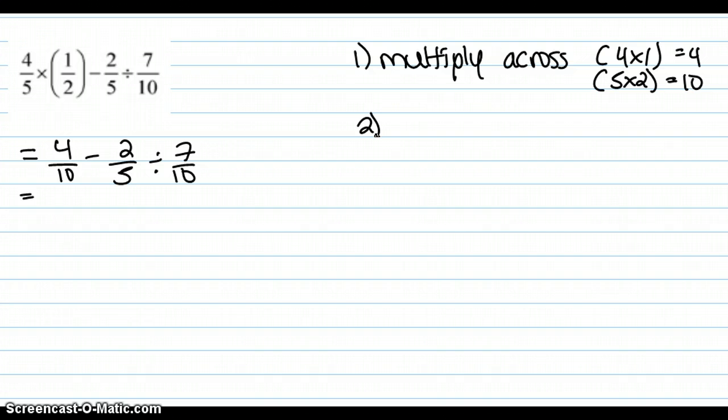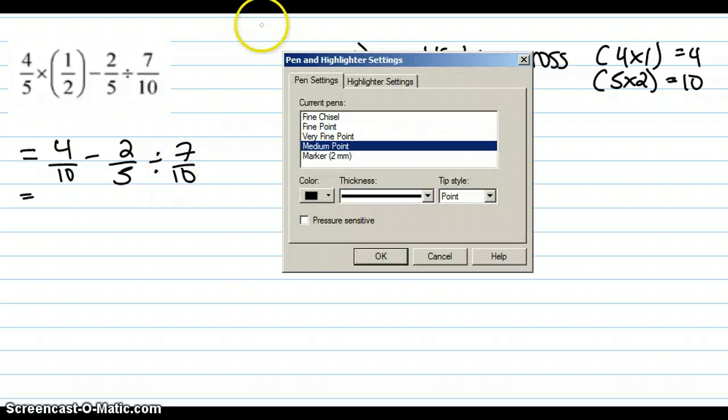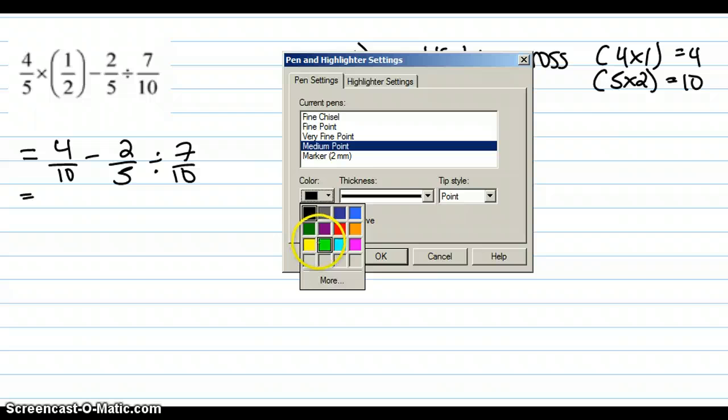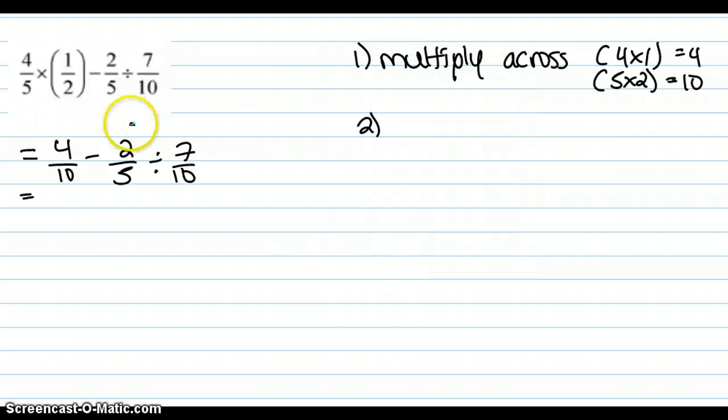Alright, so next, as we have learned in our other videos, we want to take the reciprocal of the divided. I'll just grab a different pen color here just to make it a little easier. We want to make this reciprocal and change that sign to a multiplication for step 2.